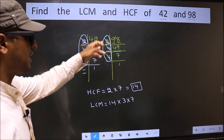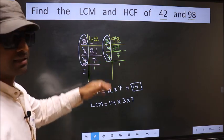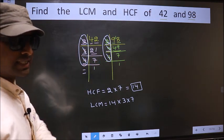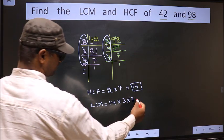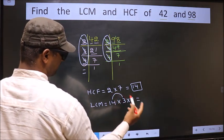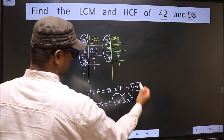Now each number has been cut. So our LCM is 14 times 3, 42, 42 times 7.